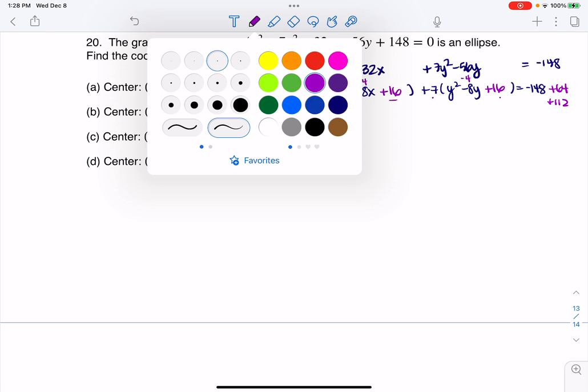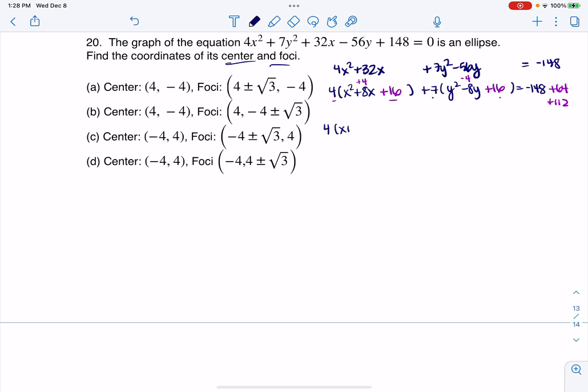So I'm going to have 4 times (x plus 4) squared plus 7 times (y minus 4) squared. And when I crunch this, negative 148 plus 64 plus 112, you're going to get 28. The next thing I want to do is divide every term by 28. So I'm ultimately going to have (x plus 4) squared over 7 and (y minus 4) squared over 4 equals 1.